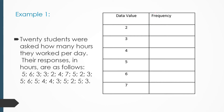The frequency is the number of times that data value occurs. For two hours, three individuals responded two hours, so the frequency is three. For three hours, five individuals responded three hours, so the frequency is five.